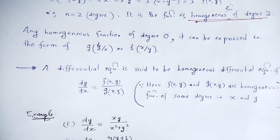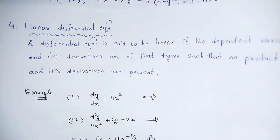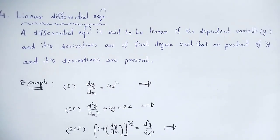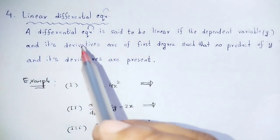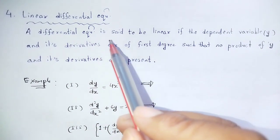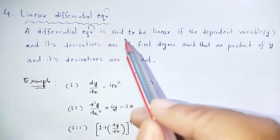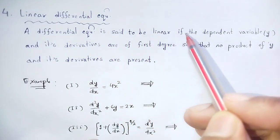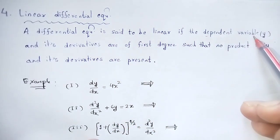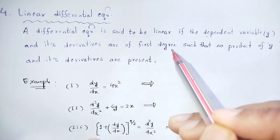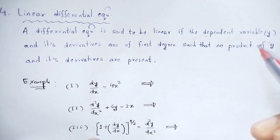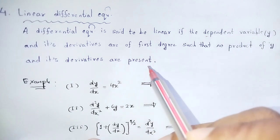Next, linear versus non-linear differential equations. A differential equation is said to be linear if the dependent variable y and its derivatives are of first degree, such that no product of y and its derivatives are present.